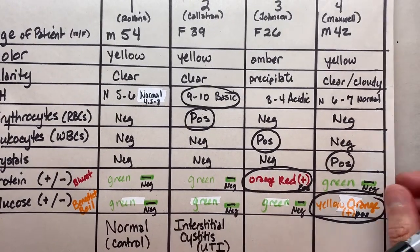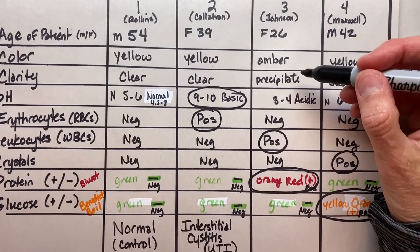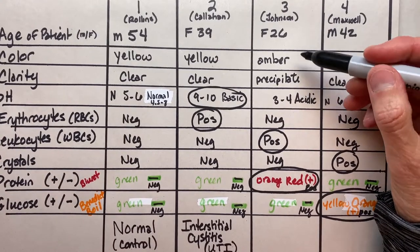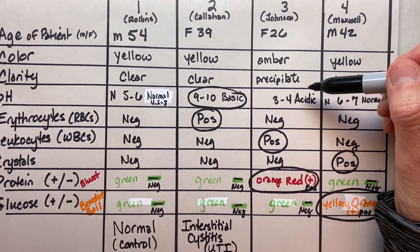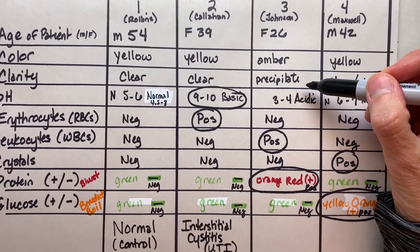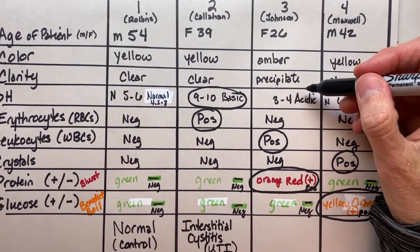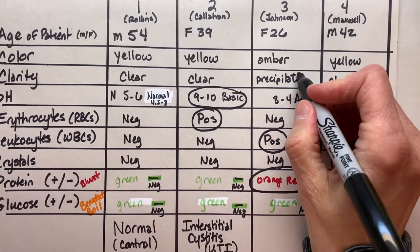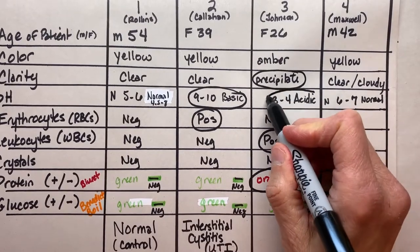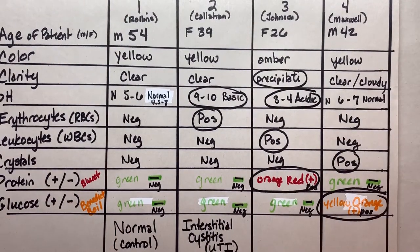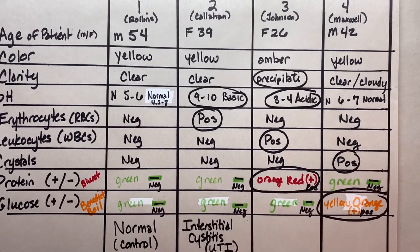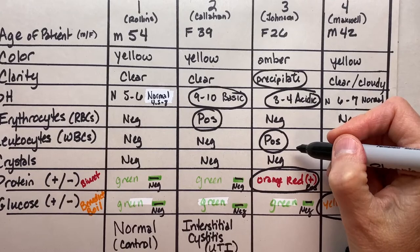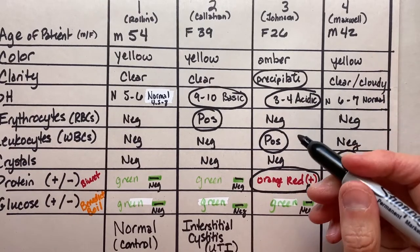Now let's look at Ms. Johnson. She's a 26-year-old who had that amber-colored urine, but amber's not necessarily abnormal. Remember, the urine could be yellow to amber in color and still be alright. She did have that strange precipitate at the bottom, even though the urine itself looked clear. The precipitate at the bottom, to the naked eye - even though it looked clear to me, the precipitate tells us that it's not. I'm just going to circle that. Note that the pH of Ms. Johnson's urine was pretty acidic - three to four is pretty acidic.